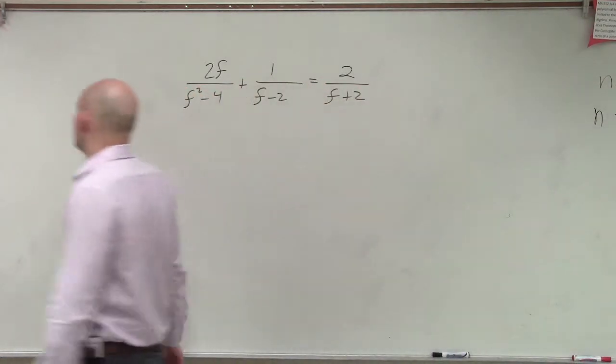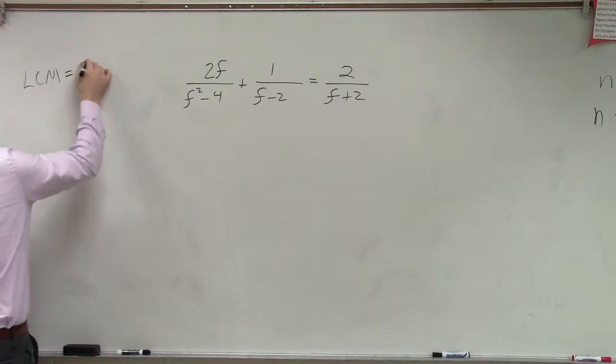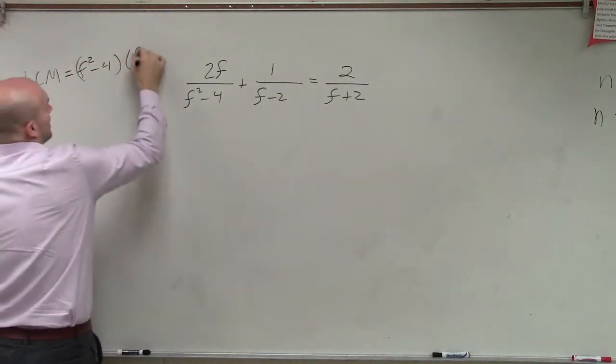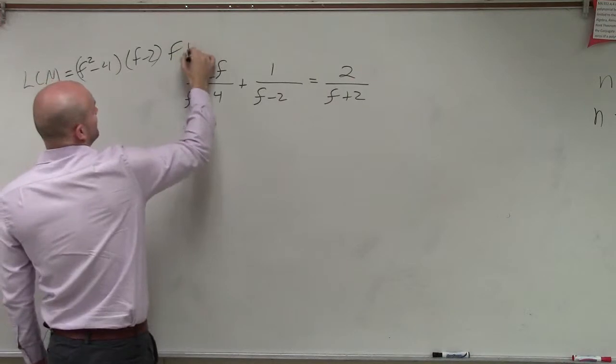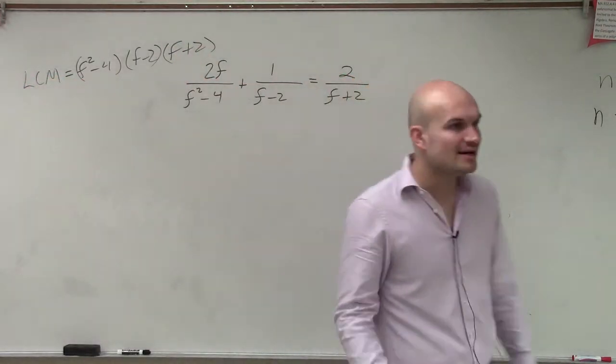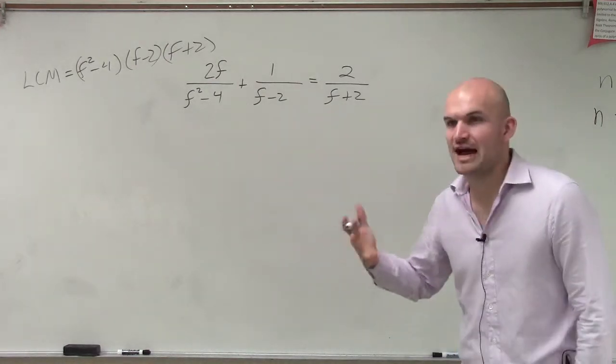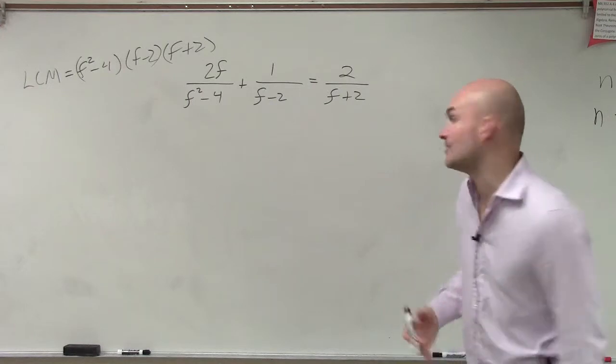Now, it might be easy for you guys to say, oh well, the least common multiple or denominator is f squared minus 4, f minus 2, and f plus 2, right? You just say, oh, just take all the denominators and make them in there. But that's not always going to be the least. If you have an opportunity to factor a denominator, factor it out.